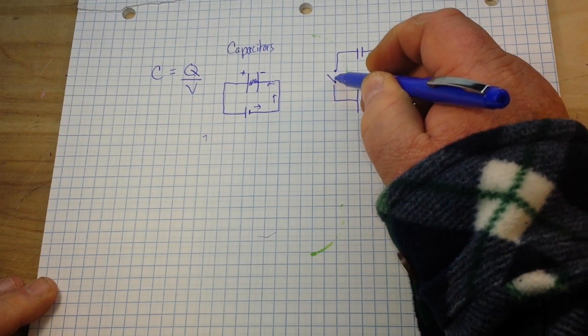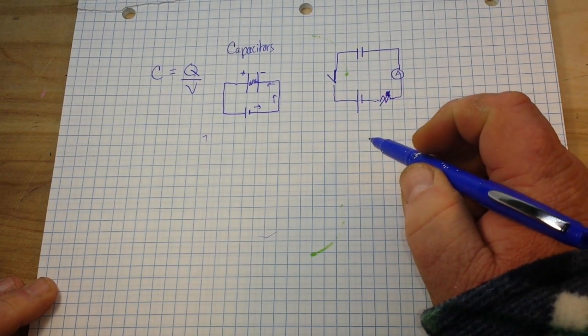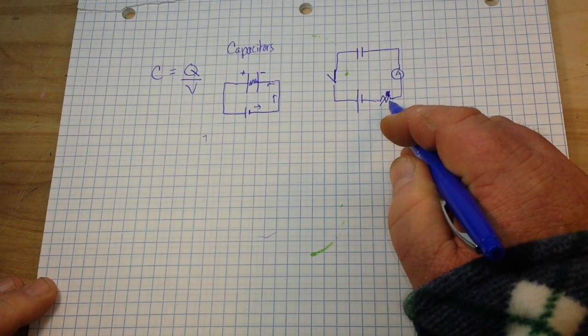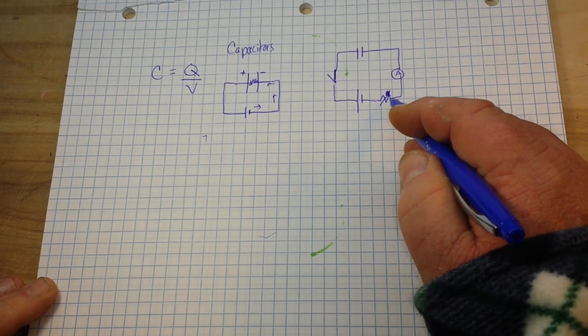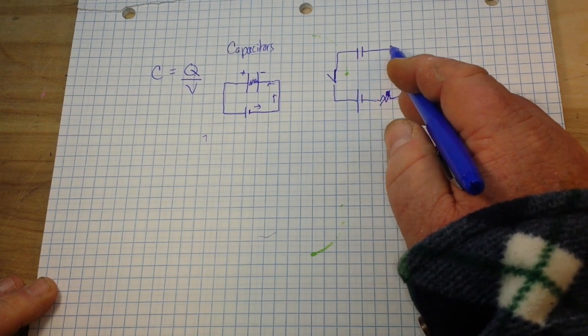Now, one thing to keep in mind is we do need this to be a variable resistor. So, what happens when we close the switch? We'll start with the variable resistor in the highest position, so it provides great resistance, keeping the current level.